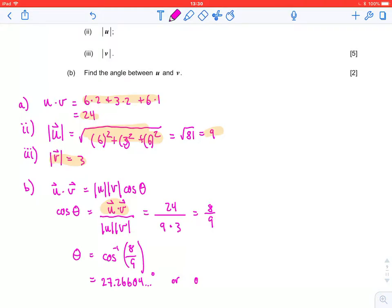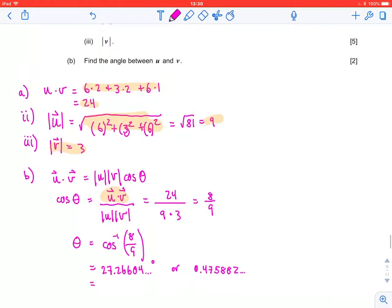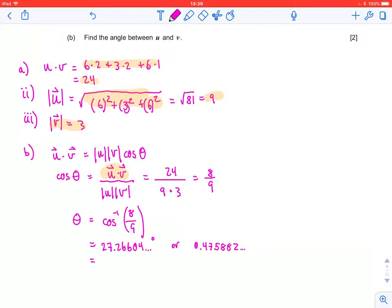Or if you're in radian mode, you'll get 0.475882 radians. One or the other is fine. There's no preference because it doesn't say to give the measure in degrees. Just make sure, because this is a paper 2 question, that you end up writing those answers with three significant figures. So 27.3 degrees or 0.476 radians.